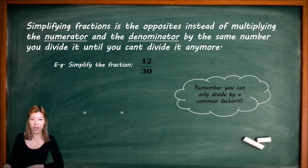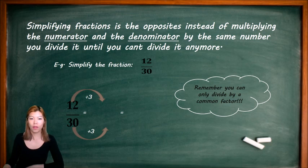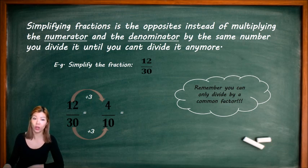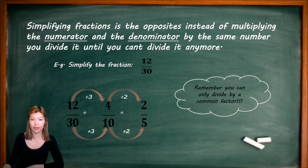So simplify the fraction 12 over 30. We know that 12 and 30 are divisible by 3: 12 divided by 3 is 4, and 30 divided by 3 is 10. But when we get 4 over 10, we notice they're both even numbers, so they're both divisible by 2. Divide the top by 2 to get 2, and divide 10 by 2 to get 5. So you can keep doing that until you can't do it anymore — 2 and 5 have no more simplification.